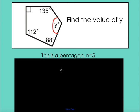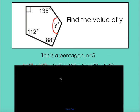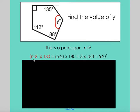So, n equals 5 in this case. So I'm going to use the formula, n minus 2 times 180. That gives me 5 minus 2 times 180. That gives 3 multiplied by 180, which is 540 degrees for all of these angles added together.